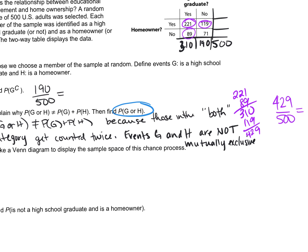Now when I draw a diagram, the both is my 221. If this is graduate, the first circle is graduate and the second circle homeowner. What goes in the graduate only are those that are graduates but not homeowners. So that's a yes to graduate, a no to homeowner. How many is that? Wait. What did I say? Yes to graduate, no to homeowner, 89, right?